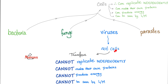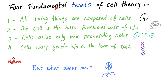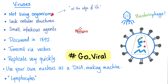On the other hand, viruses are not cells. They cannot replicate independently, cannot make their own proteins, cannot produce energy, and cannot be seen by light microscopy — only by electron microscope. The four fundamental tenets of cell theory are: all living things are composed of cells; the cell is the basic unit of life; cells arise only from pre-existing cells; cells carry genetic info in the form of DNA. To which the virus responds: 'But what about me?'